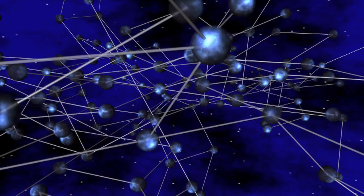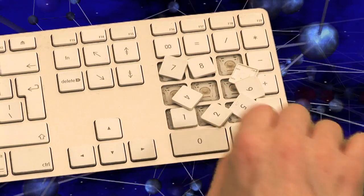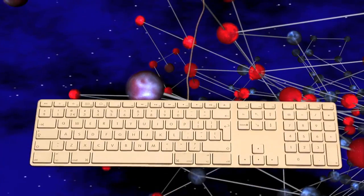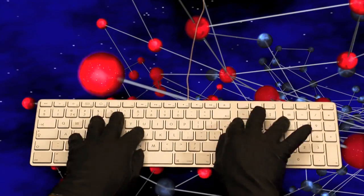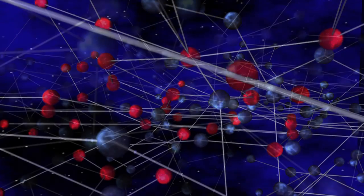Sometimes, network administrators announce IP addresses that don't belong to them, either by accident or on purpose. Whatever the cause, a wrongly announced IP address block can take an entire network offline.